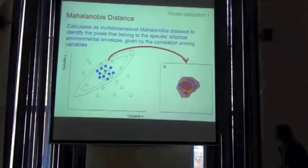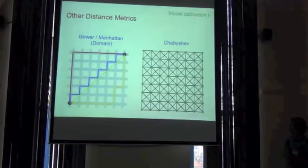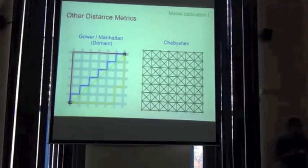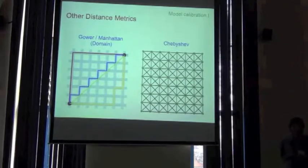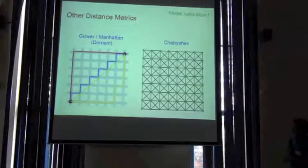And there are other methods, distance methods, like the one that Richard mentioned, the Gower matrix, which is based on calculations of Manhattan distances. This is a comparison between Euclidean distance between two points.